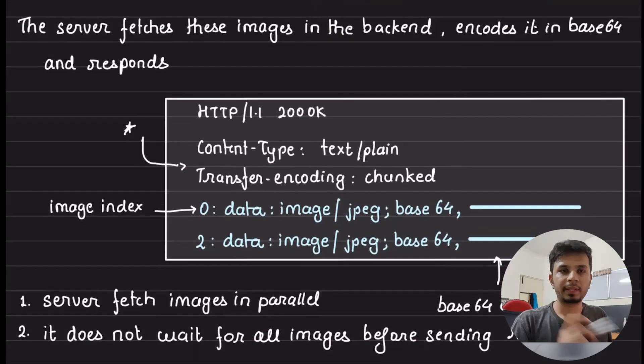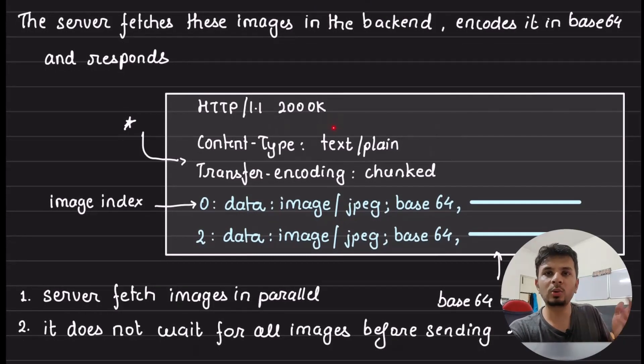And the response looks something like this. It's HTTP 1.1 200 okay, content type is text plane, transfer encoding is chunked. We will look at this extremely important part, transfer encoding chunk, and then you have some image data. Now, here if you look at this, this is an image data of like here you can see a number zero and then data colon image slash JPEG, base64 and some bytes, which is base64 encoded string.